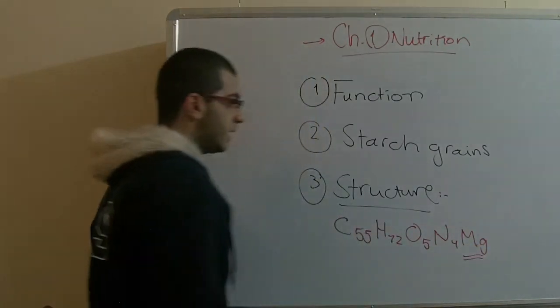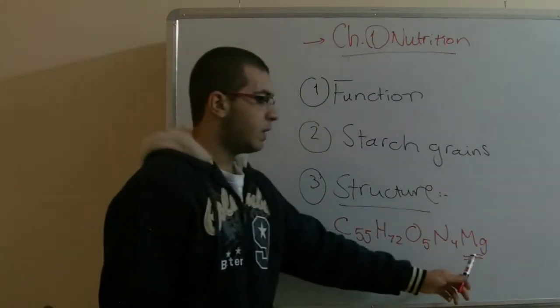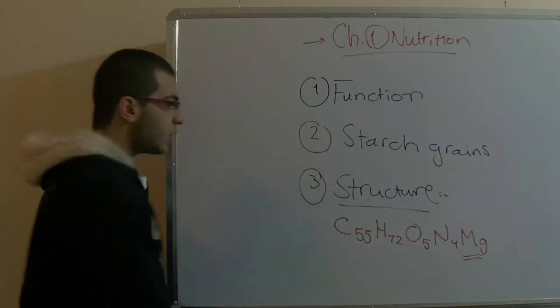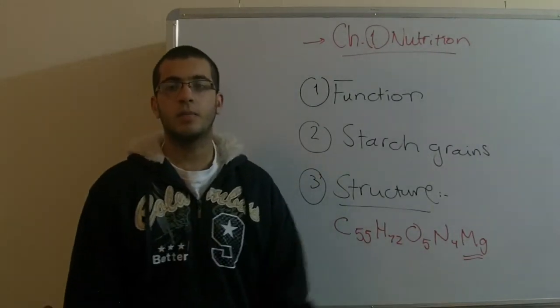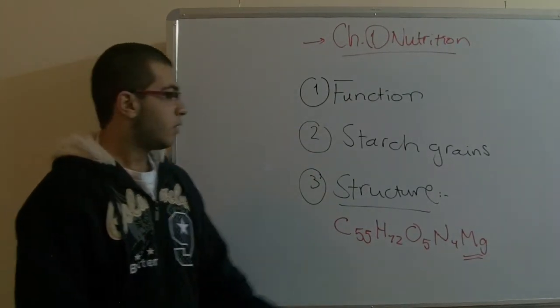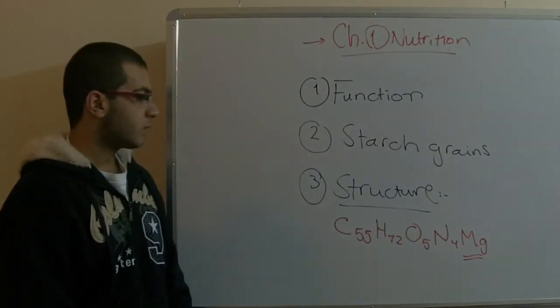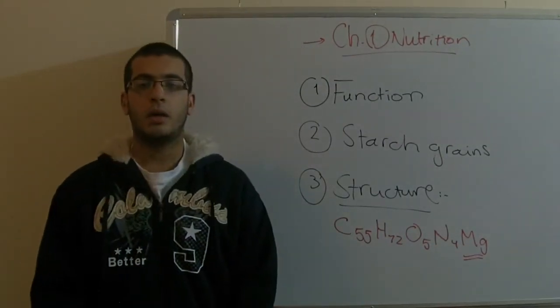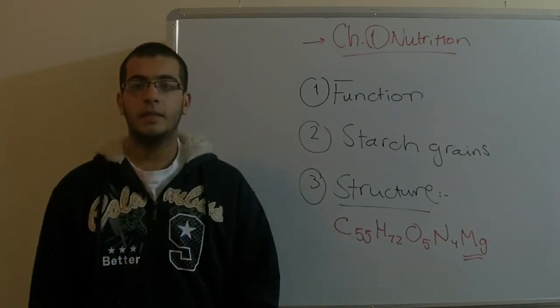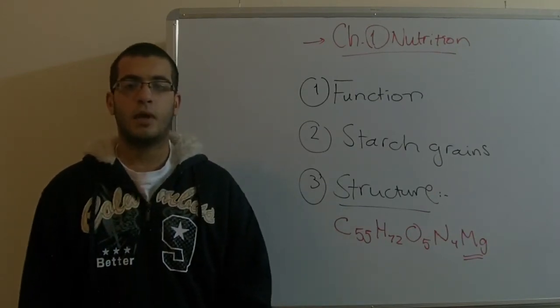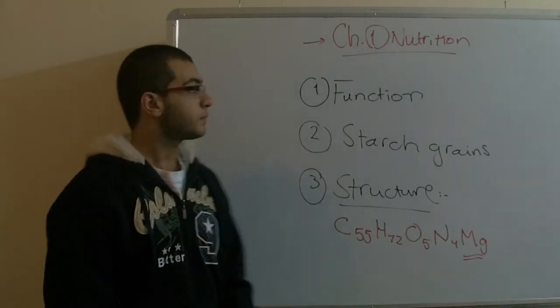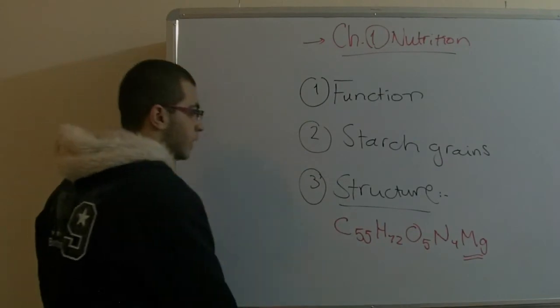This is magnesium. If you remember, we mentioned the salts which are important for the plant. We said that magnesium is important for manufacturing chlorophyll. The magnesium atom is incorporated in the middle of the chlorophyll molecule, and it is believed that it enables the chlorophyll to absorb light. This was our first point today.